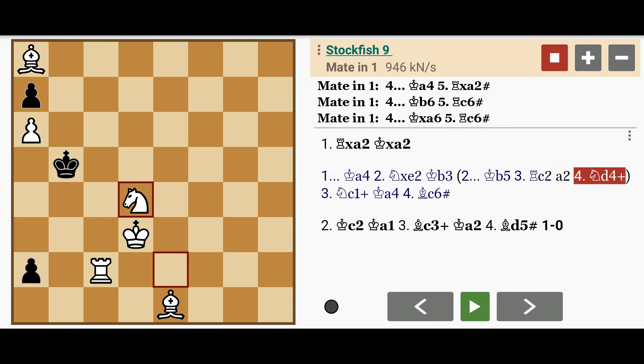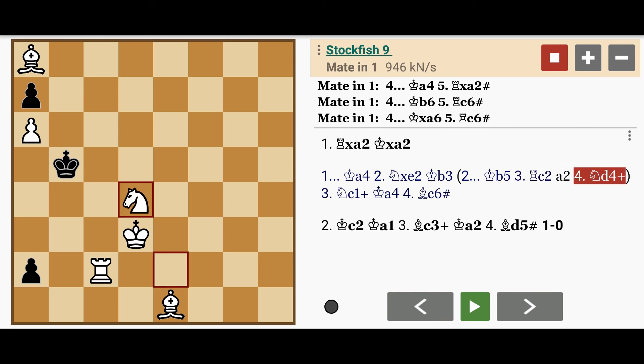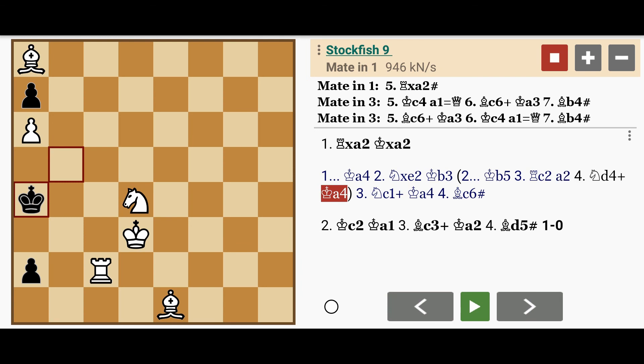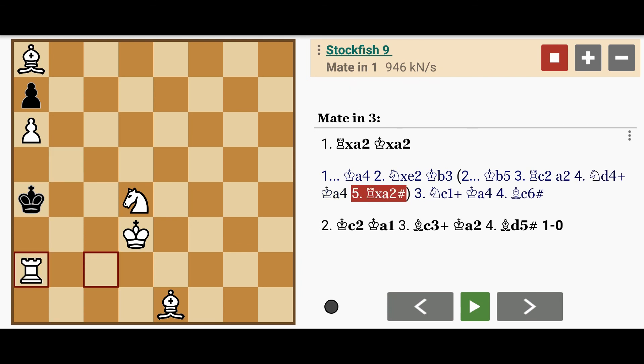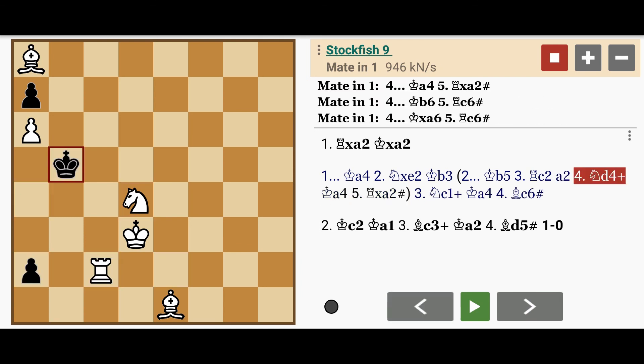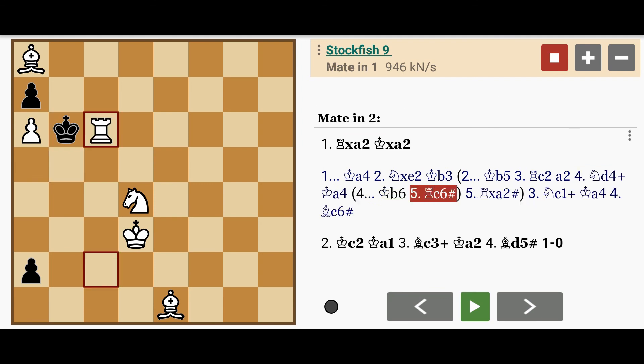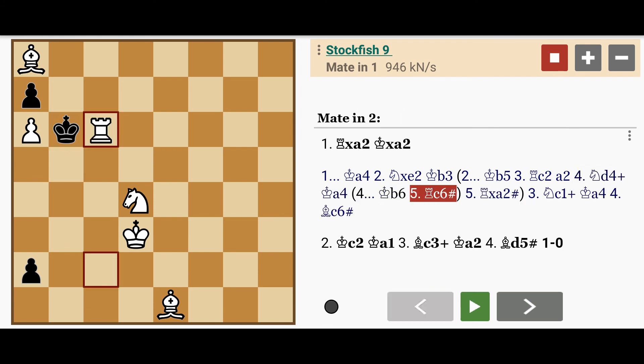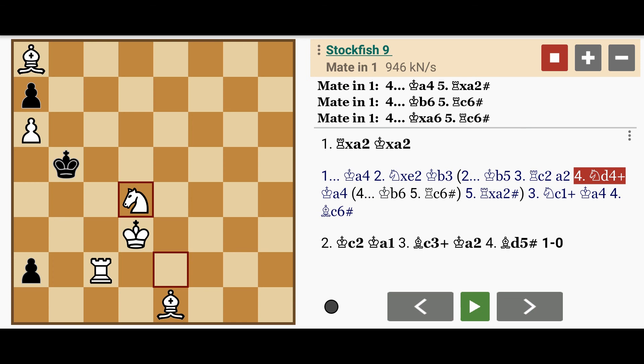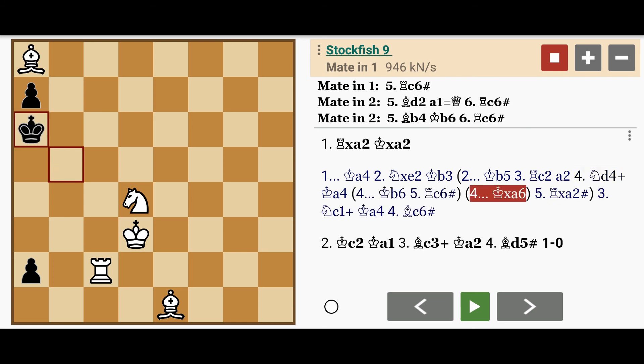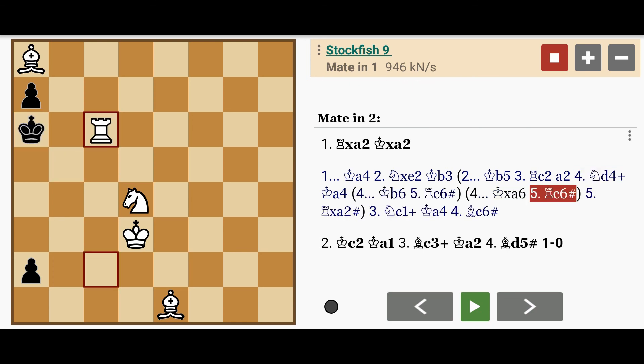If black were to proceed with a2, white then plays Nd4 check. If the king escapes to a4, then rook captures a2 mate. If the king moves, let's say to b6, then it's Rc6 mate. And of course if the king were to capture the pawn, then it's still Rc6 mate. Notice how the bishop on e1 is also guarding the square on a5.